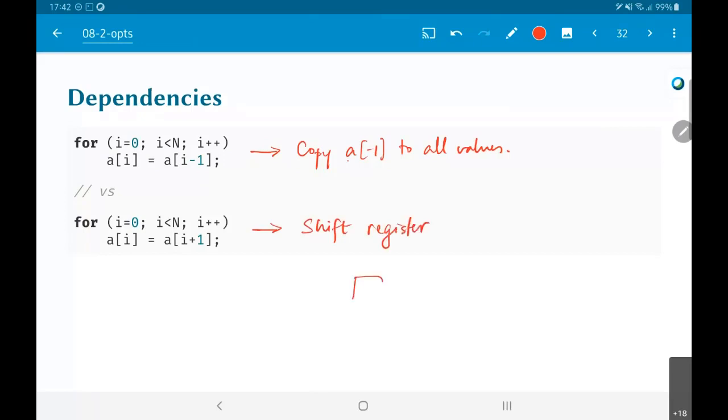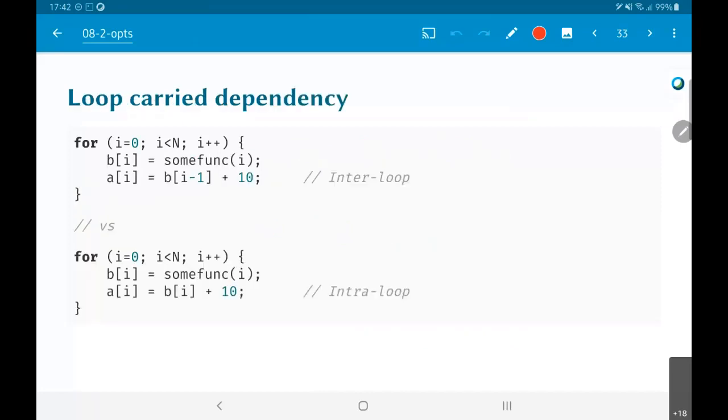This on the other hand effectively does something which is the equivalent of a shift register. All values that you have over here will basically end up going like this—a[i] gets the value a[i+1]. Now a shift register is a hardware construct, but functionally this is essentially what it's trying to do.